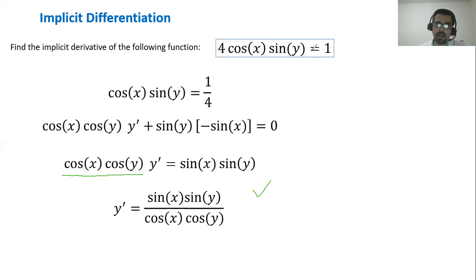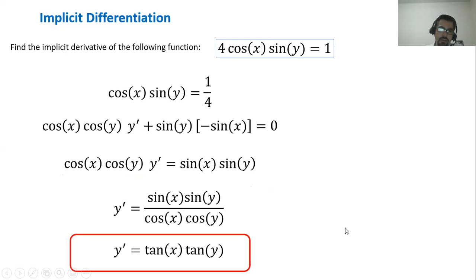In this case, we can simplify with trigonometric identities. The identity we're going to use is the identity that says that sine over cosine is equal to tangent. So sine x over cosine x becomes tangent of x. And then sine y over cosine y becomes tangent of y. And this is our result. This is the derivative of y with respect to x. This is y prime. Our answer is y prime is equal to tangent of x times the tangent of y. That is the answer.